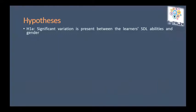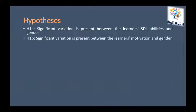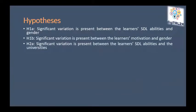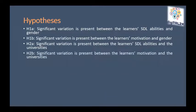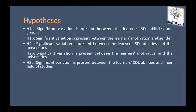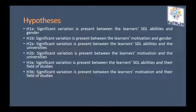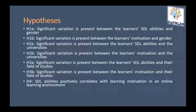The hypotheses devised for this research are: firstly, significant variation is present between learners' SDL abilities and gender; secondly, significant variation is present between learners' motivation and gender; thirdly, significant variation exists between learners' SDL abilities and the universities they attend; similarly, between learners' motivation and university; there is significant variation between learners' SDL abilities and field of studies, and between motivation and field of study; and SDL abilities positively correlate with learning motivation in an online learning environment.